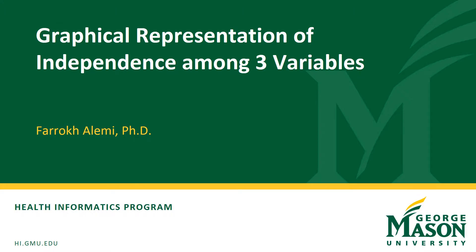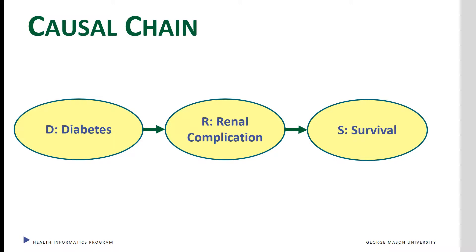This presentation focuses on the causal structure of a three variable network model. All three variables are related to each other. This presentation was organized by Farah Kalemi. The three variables may be influencing each other in a causal chain. We see here that diabetes affects renal complications and renal complications affects survival, creating a causal chain.